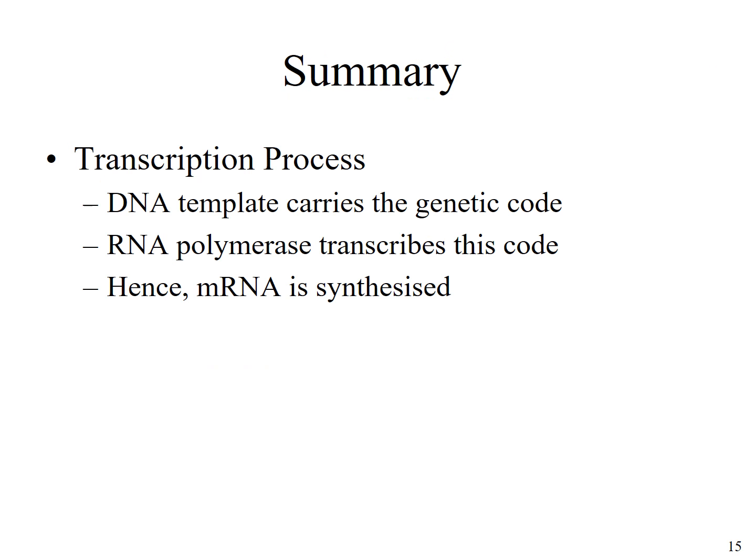We have come to the end of the lecture. In summary: the DNA template carries the genetic code; the 3' to 5' strand of the DNA is used as a template to make mRNA or HnRNA; the RNA polymerase transcribes this genetic information to an HnRNA; the HnRNA undergoes post-transcriptional processes — capping, polyadenylation, and splicing — to make a mature messenger RNA. These mature messenger RNAs will then be translated to proteins. We will look at the process of translation in the next lecture.